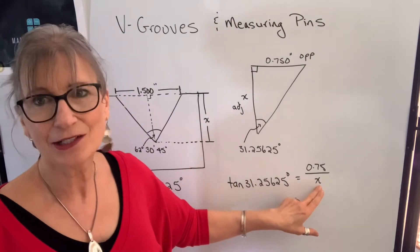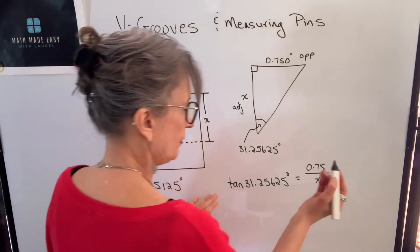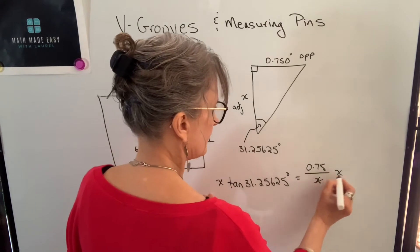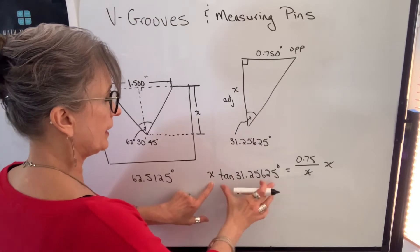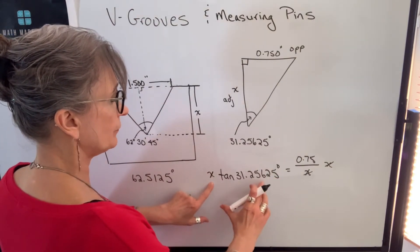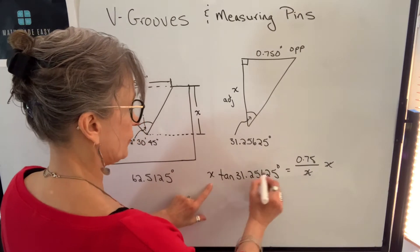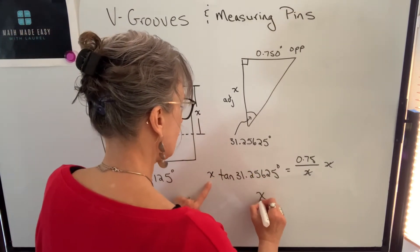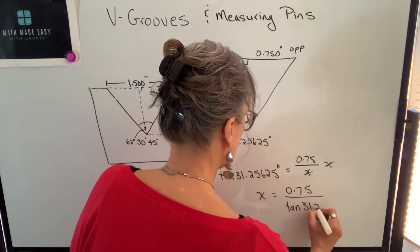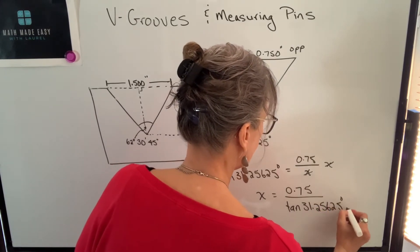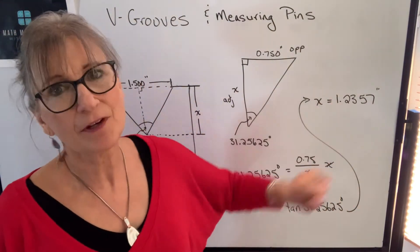In order to solve for x, I need to get it out of the denominator first. So what I'm going to do is multiply both sides by x, and that will cancel it on this side. Now I need to isolate x on the left-hand side, and in order to do that I'm going to divide by tangent of 31.25625 degrees. Whatever I do to this side, I must do the same thing to the other side. So it will cancel and I'll just have x. On the right-hand side I will have 0.75 divided by the tangent of 31.25625 degrees. When I calculate that, I get x equals 1.2357 inches.